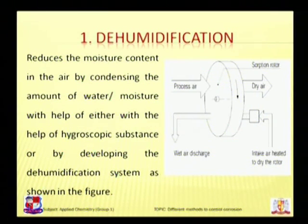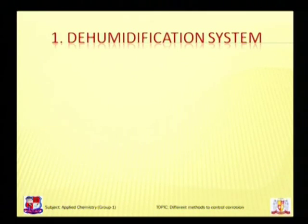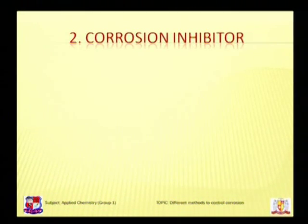As shown in this figure, in this process a rotation rotor is developed where dry air is taken inside and moisture is then discharged from the outlet. This is a setup of a dehumidification unit where there is an inlet for fresh air intake and another outlet for moisture-laden air discharge. Dehumidification systems are developed to produce dry air by reducing temperature, using solvents to dry air, or using compression to dry air.